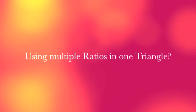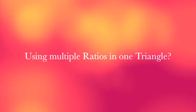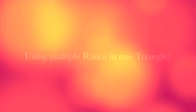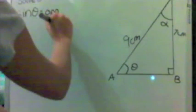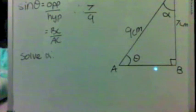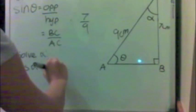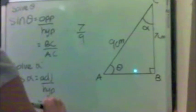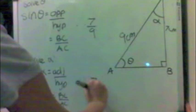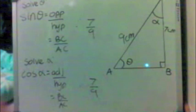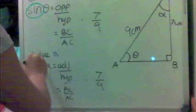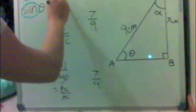Now that we know the basics of when to use each trigonometry ratio, all three ratios can actually be used in the same triangle — it just depends on which unknown angle you look at. In this example, to find unknown angle alpha, given AC at 9cm and BC at 7cm, we use cosine. However, for the unknown angle theta, we use sine because BC is the opposite side. The ratio used really depends on the angle we are looking from, even with the same measurements.